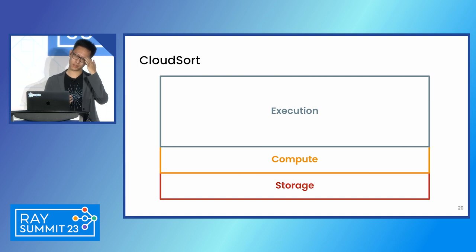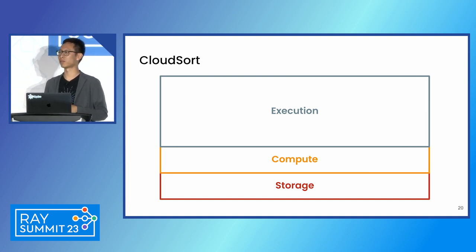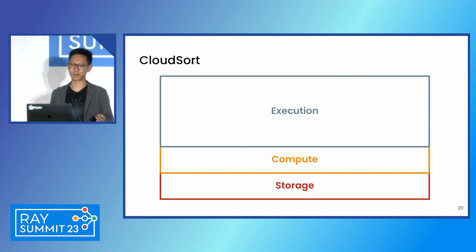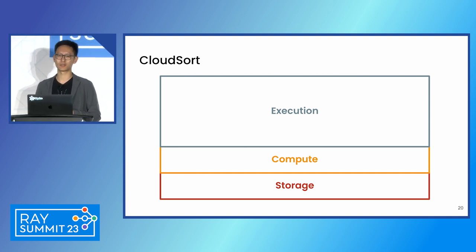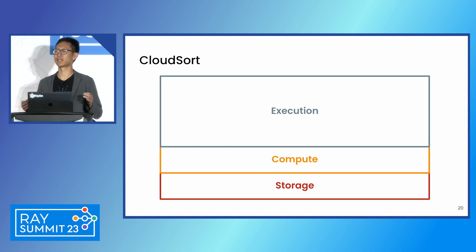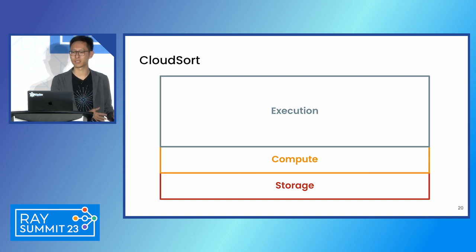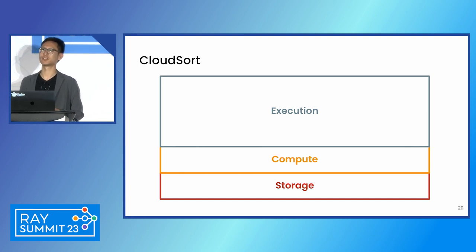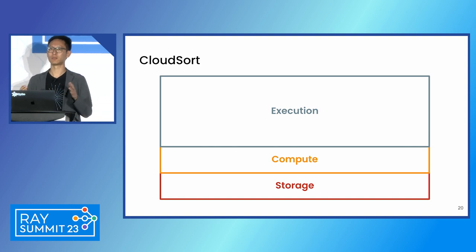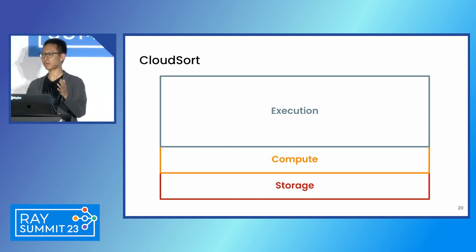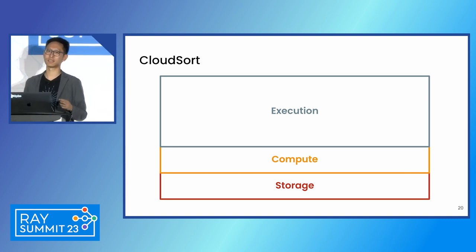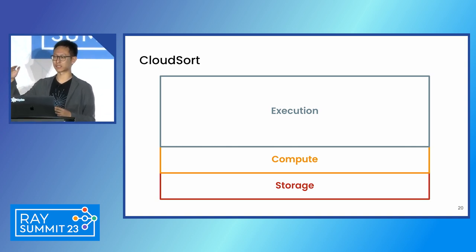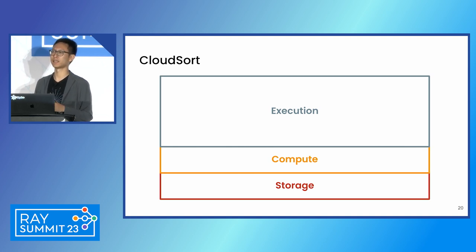Let's dive into some cool things we did to actually achieve that CloudSort world benchmark. Sorting sounds like a simple problem — if you're sorting a list of 10 numbers, it's trivial. But when the data size is as huge as 100 terabytes, this is actually a system design problem. The input data has to reside on some sort of storage, you're moving data from storage to compute, and then there has to be a distributed execution engine. On a high level, such a CloudSort system has three components: the execution software on top, the compute cluster, and the storage layer.